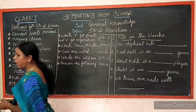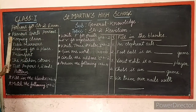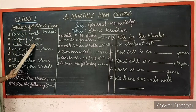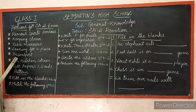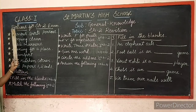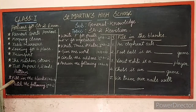First, I am going to read out the portions for SE 2 exam. Here are the portions: famous sports course, keeping clean, table annals, looking for a place, transport, the kitchen corner. This paper covers portions 1, 2 and 3. These are the portions for the exam, and the same question paper format will be used.